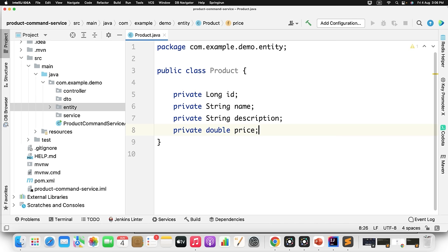Create the repository interface called ProductRepository extending JpaRepository with type Product and id of type Long. Next, configure the data source properties in the application.properties file — define the driver class name, URL, username, password, hibernate DDL auto, dialect, and server port. That's our database configuration for the command service.